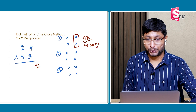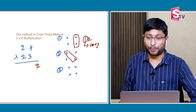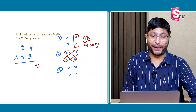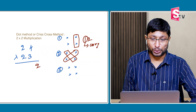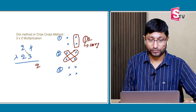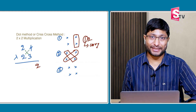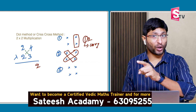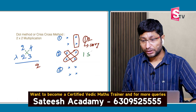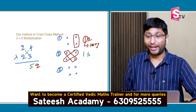Step 2: multiply units place into tens place and tens place into units place. 3 × 2 = 6. 4 × 2 = 8. 8 plus 6 is 14, plus 1 carry = 15. Write down the 5 in the answer; 1 will be carry.